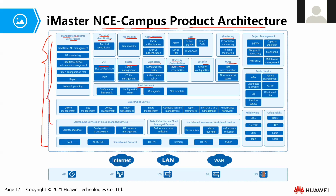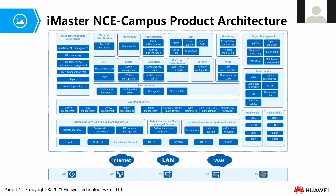All these services will communicate with the devices using southbound protocols. For southbound protocols, we have SSH, NETCONF, HTTP 2.0, telemetry, HTTPS, and SNMP. By using all these protocols, our NCE Campus is able to configure the devices or get information from all the devices. These are the overall product architecture for NCE Campus.